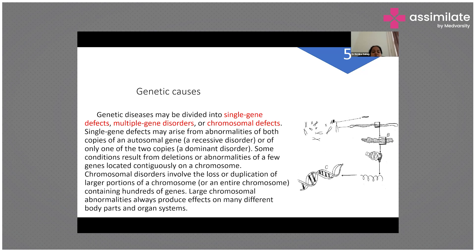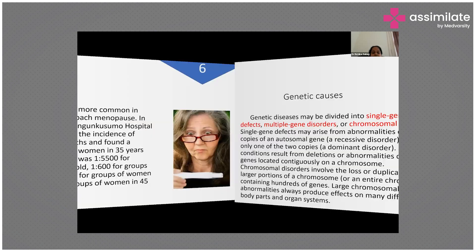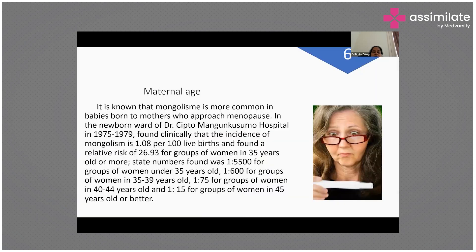Chromosomal disorders involve the loss or duplication of larger portions of a chromosome or an entire chromosome containing hundreds of genes. Large chromosomal abnormalities always produce effects on many different body parts and organ systems.